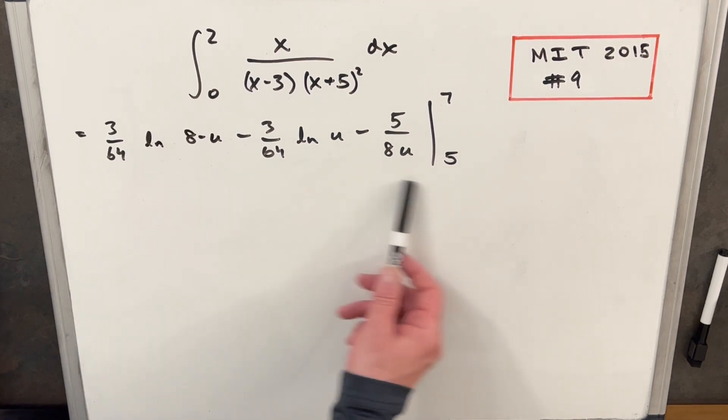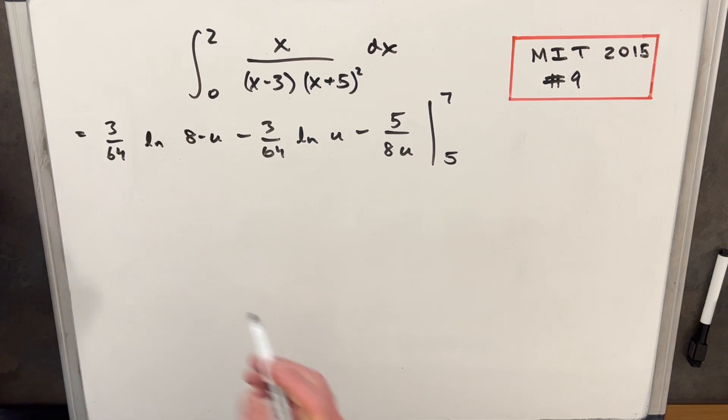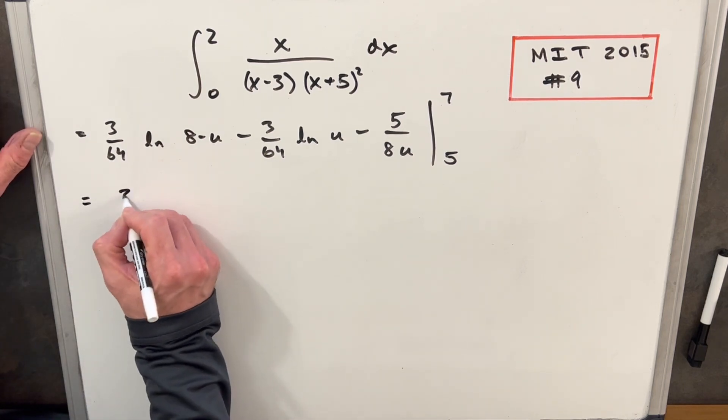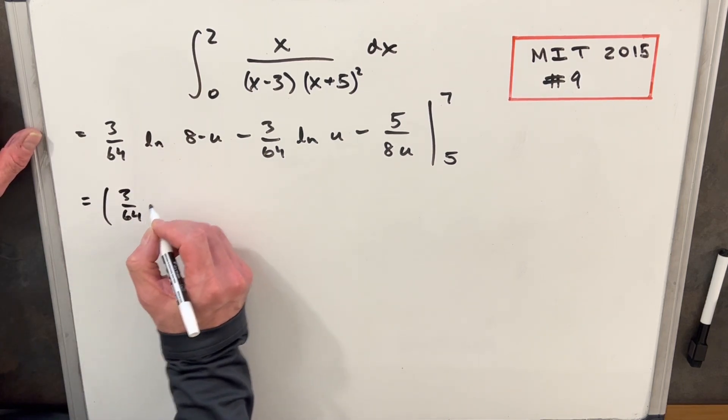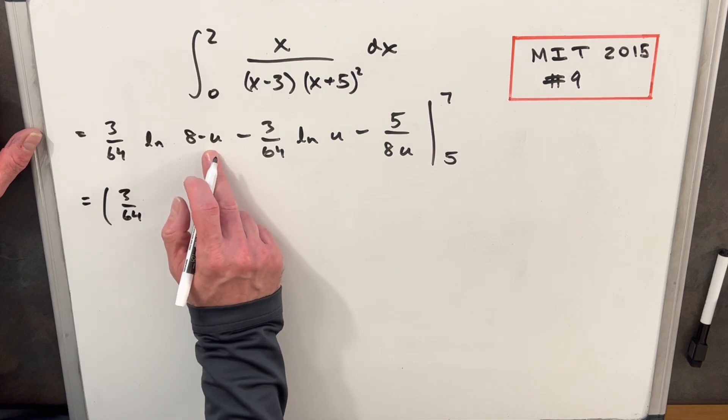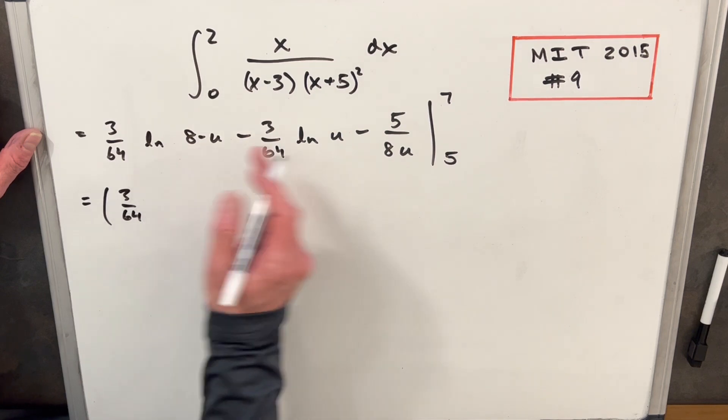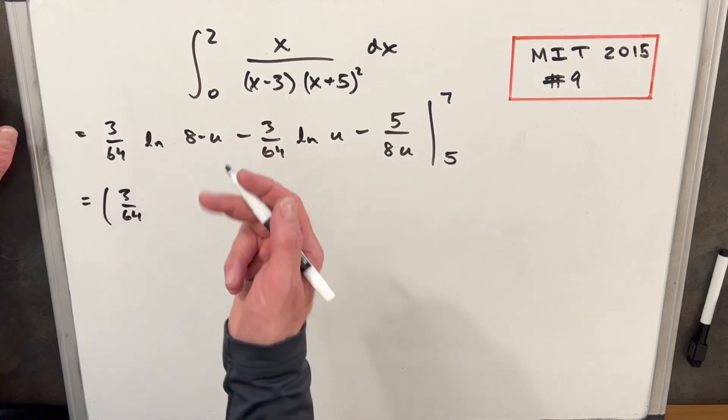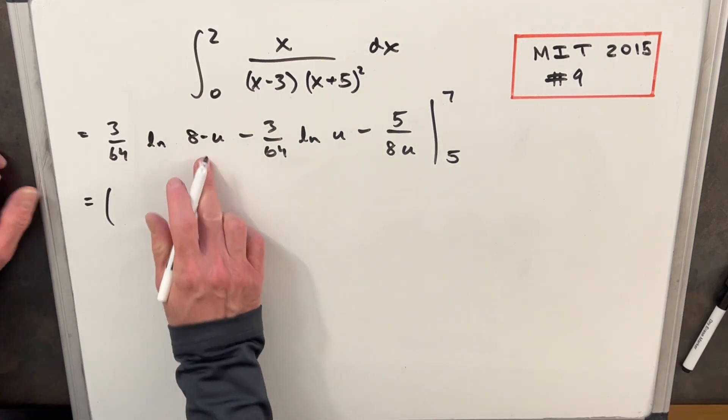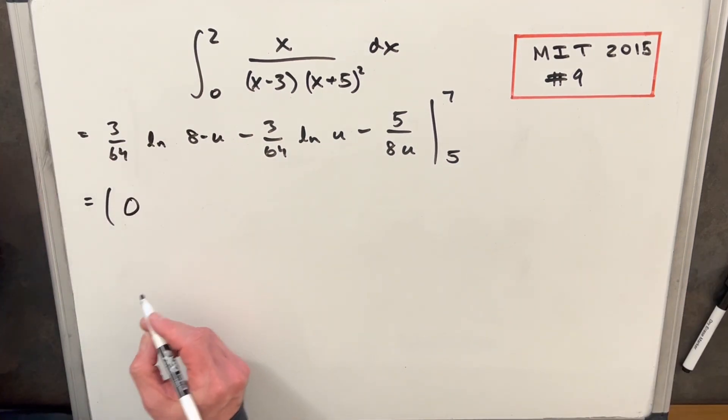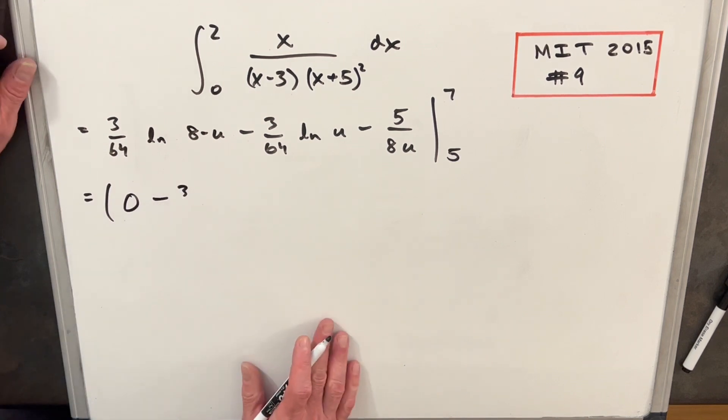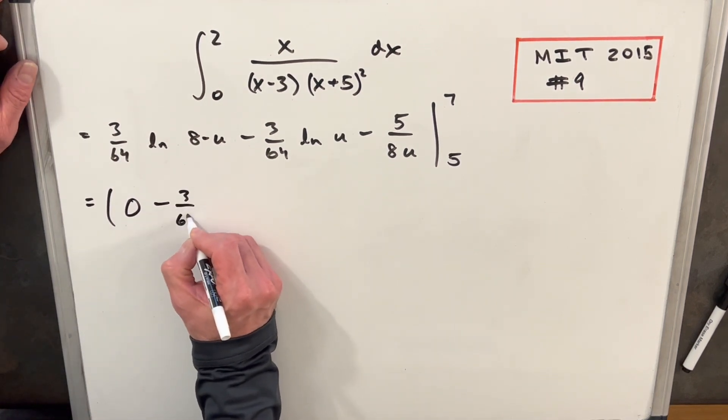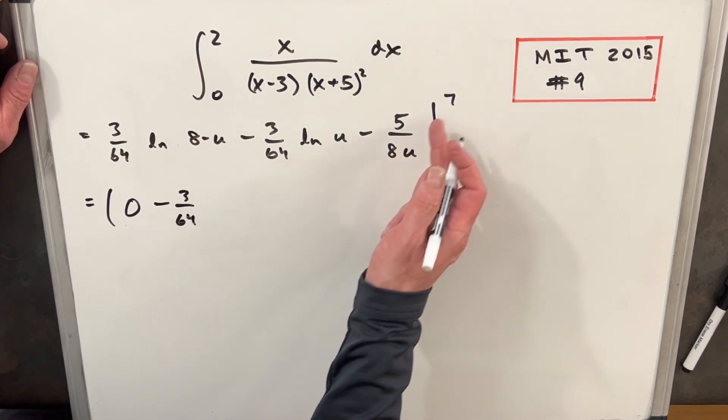Okay, so now all I need to do is just evaluate this whole long expression and simplify. We should be done. So let's start with this part here. So we're going to have three over 64 natural log of eight minus seven is one. So the ln of one is zero. So this first piece at seven is going to be zero. So we'll just have a zero there.